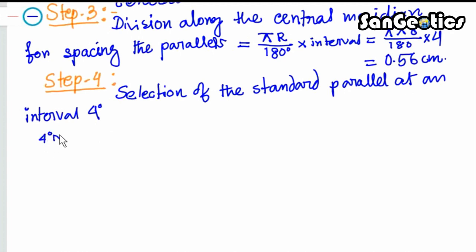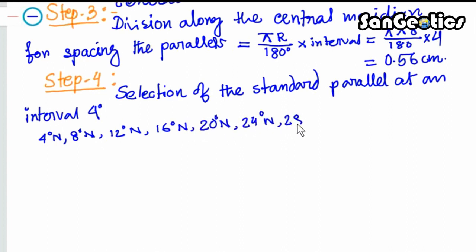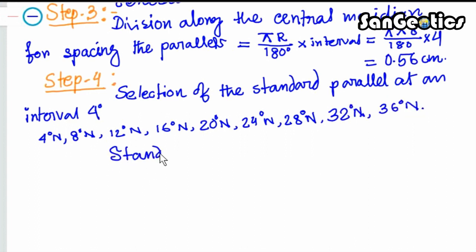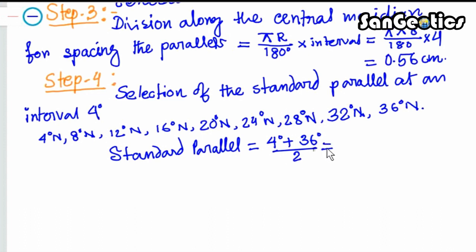The parallels are: 4°N, 8°N, 12°N, 16°N, 20°N, 24°N, 28°N, 32°N, and 36°N. The standard parallel equals (4° + 36°) / 2 = 20° North.